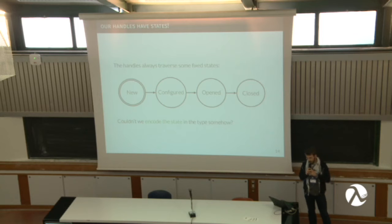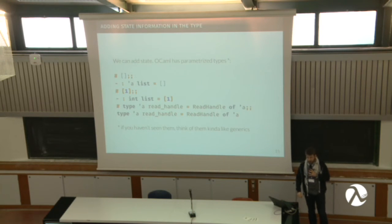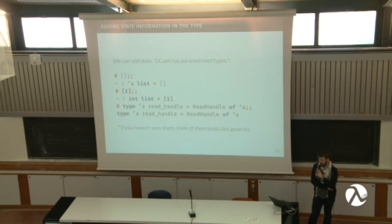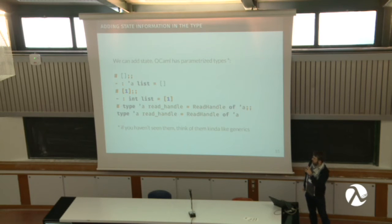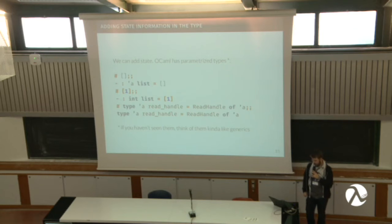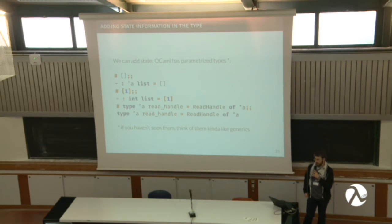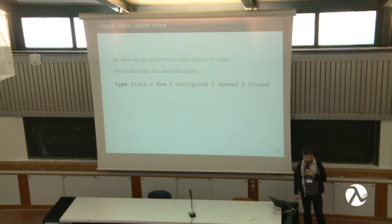We have handles and we know there are states. Let's try to put it together into one. For this, we need to add the state information to the type. OCaml has parameterized types — you get a list, but it doesn't say which type. It's a 'quote A list', meaning it's basically anything, like the A type annotation in Haskell. If you put something in, it's an int list. You can also define your own types the same way — a 'quote A read handle' — which says it's a read handle of some type. It works kind of like generics.